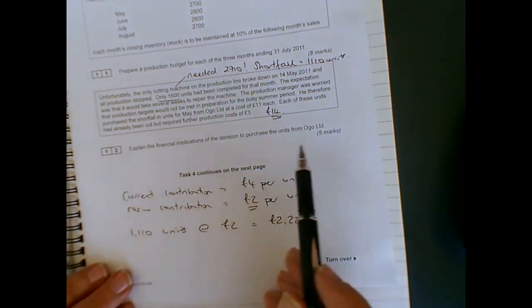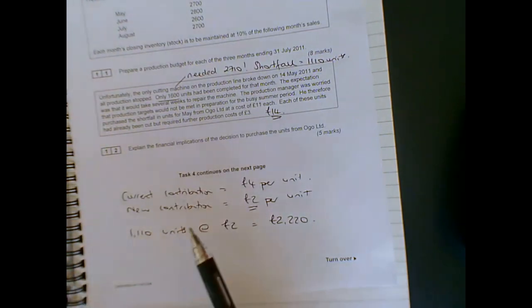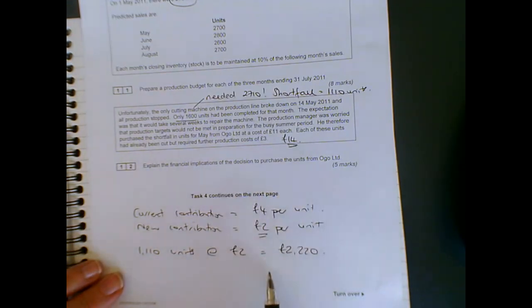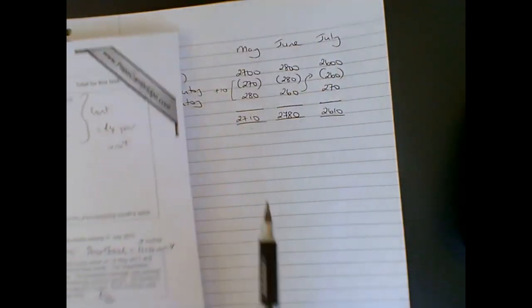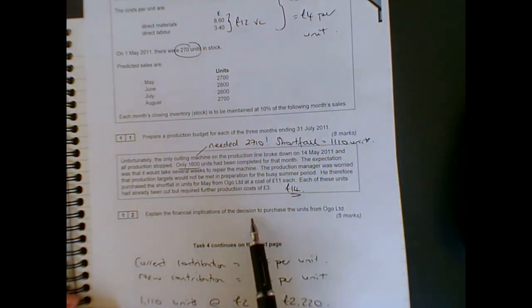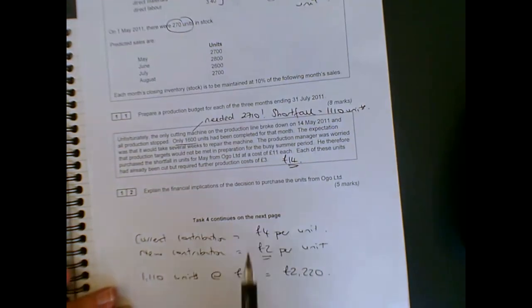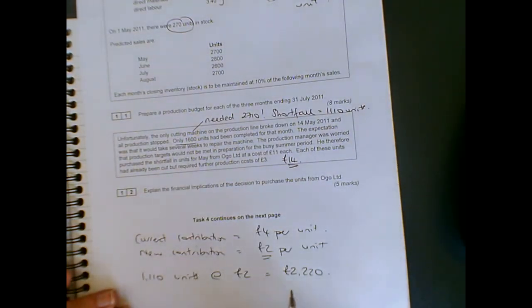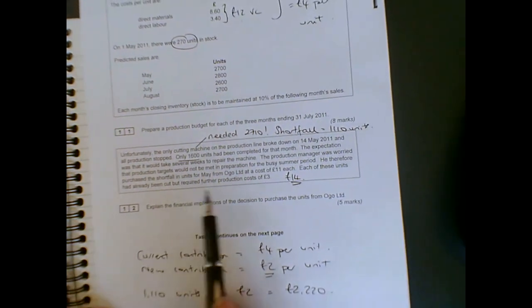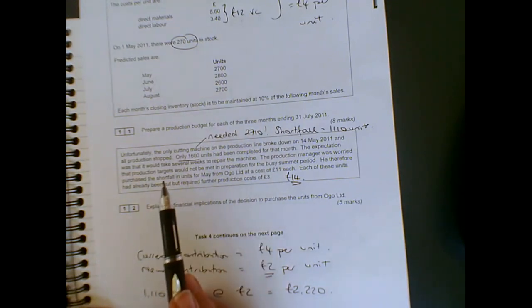The question in the current specification might ask us to think about the other implications. Things like the fact that you'll be able to satisfy demand would be a good thing, because you are able to supply all of the units per your production budget. So you've maintained market share, customers aren't going elsewhere. Potential downsides, though: obviously, it's making less profit than if we had got the machine up and running, we've lost an extra £2,220. And also, we maybe could have some concerns about delivery times, quality of the products, that kind of thing.